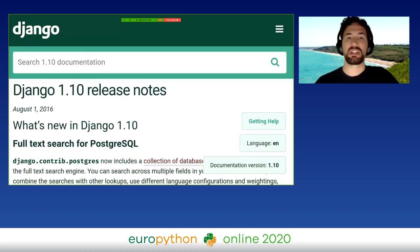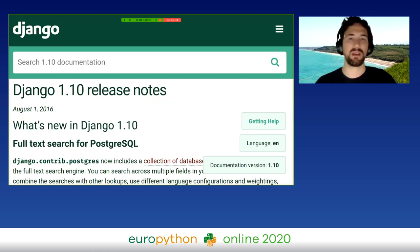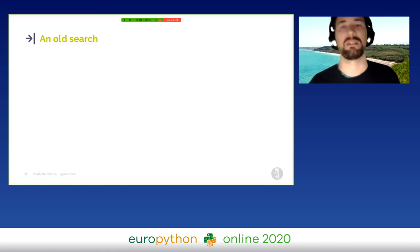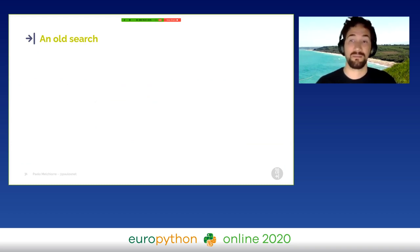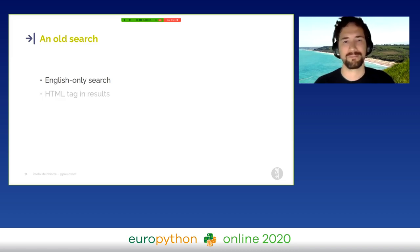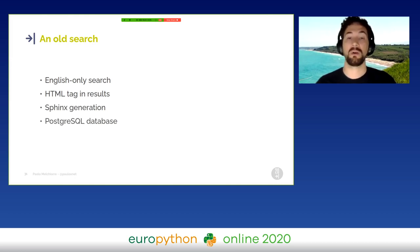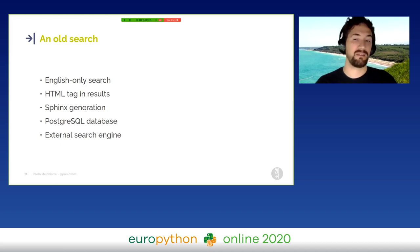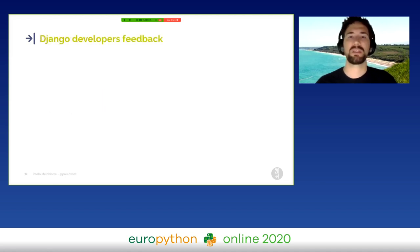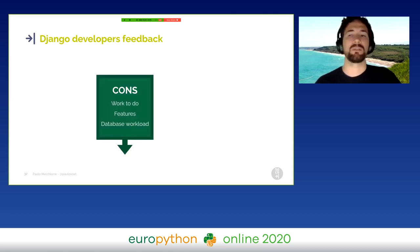I started using the full-text search in Django 1.10 and searched frequently in the Django documentation for information about this new feature. I started asking myself how the search function in the Django website itself was implemented. I noticed that the search was performed only on English contents, and in some cases there were HTML tags in the results. I studied the Django website source code and found out that documentation was generated with Sphinx, all the data was stored on Postgres, but the search was performed in an external search engine. So I proposed to fix that on the Django developer mailing list.